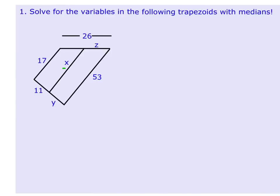So I'm going to start with x, and x is the median. So I know that in order to get x, I have to add the bases together, 17 plus 53, and divide that by 2. So if I add 17 and 53, I get 70, and 70 divided by 2 is 35. So x has to be 35.